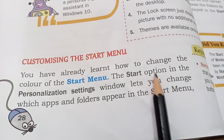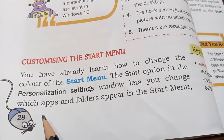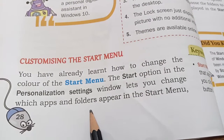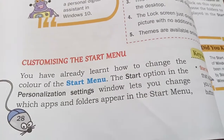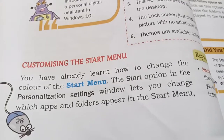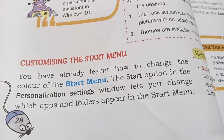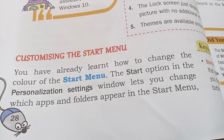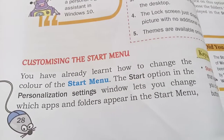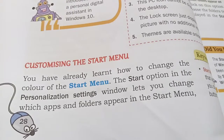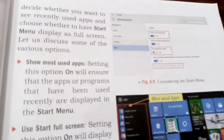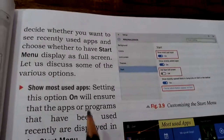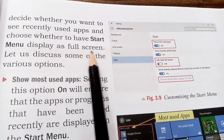The Start option tells us about the appearance of the start menu — which apps and folders we want to display. The most important thing is that you can use the start menu to access things quickly with just one click. You can also decide whether you want to see recently used apps and choose whether to have the start menu display as full screen.